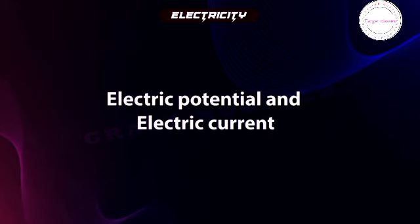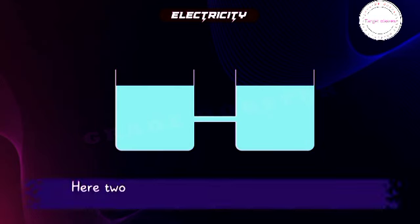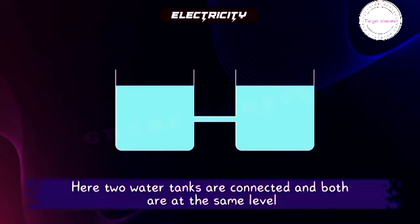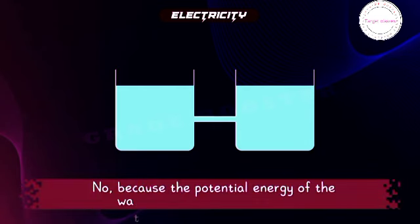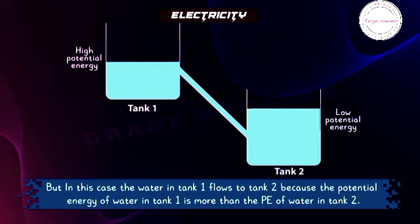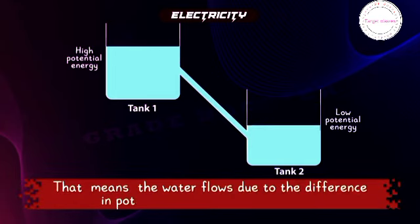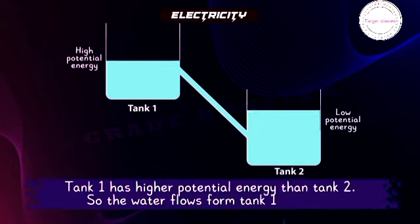Electric potential and electric current are fundamental concepts in electricity. To understand electric potential, consider two water tanks connected at the same level — no water moves because the potential energy of water in both tanks is the same. But when tank 1 is higher than tank 2, the water in tank 1 flows to tank 2, because its potential energy is higher. Water flows due to the difference in potential energy between the two tanks.